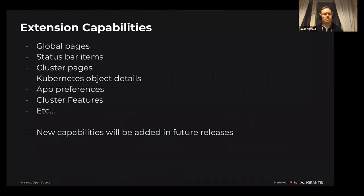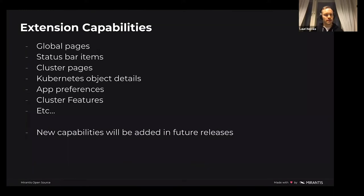So what are those extensions capable of? They can present global pages, add items to the status bar of the Lens app, add cluster pages that are visible on cluster dashboards. They can add new object details for Kubernetes resources, add application preferences or cluster features. We'll come back to this later in the extensions guide part. New capabilities will be added in future releases for sure, so this is only the start.